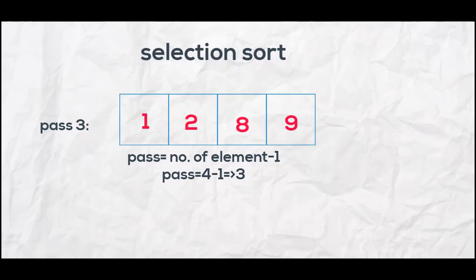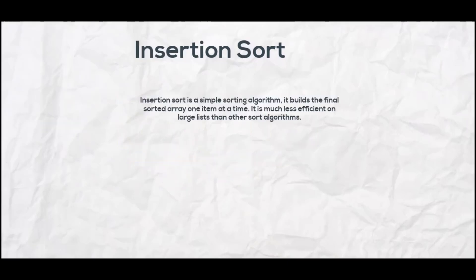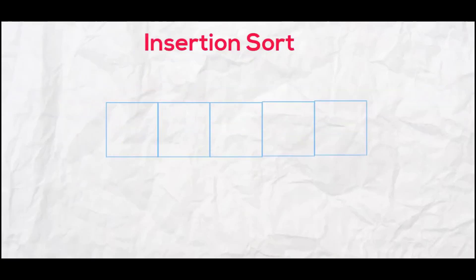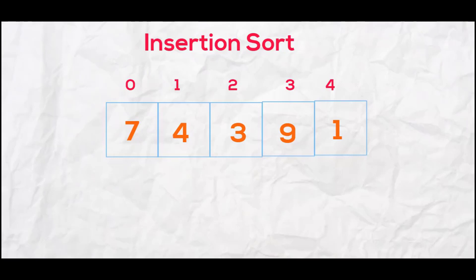Insertion sort is a simple sorting algorithm that builds the final sorted array one item at a time. It is much less efficient on large lists than other sorting algorithms. Let us look at an example with an array of size five with some random elements.